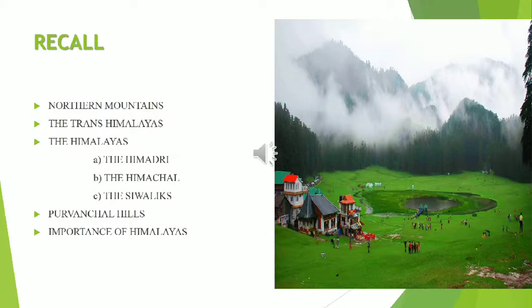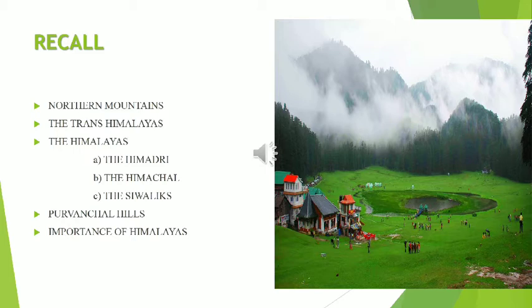In the last class we discussed about the Northern Mountains. The Northern Mountains includes the Trans-Himalayas, the Himalayas, and the Purwanchal Hills. The Trans-Himalayas is located in Jammu and Kashmir and was also called as the Tibetan Himalayas. Name some ranges in the Trans-Himalayas region — Zaskar, Ladakh, Kailas, and Karakoram.